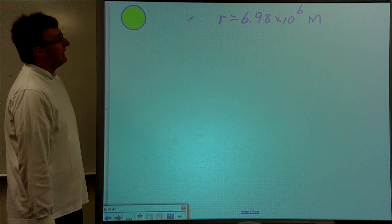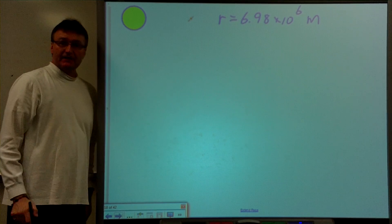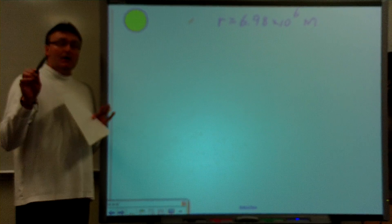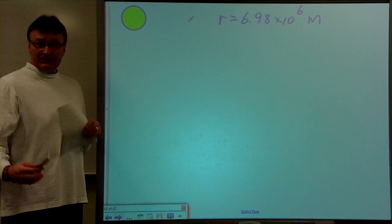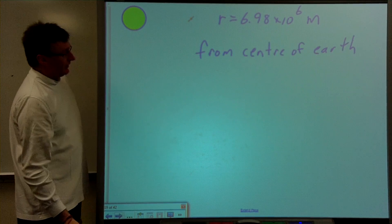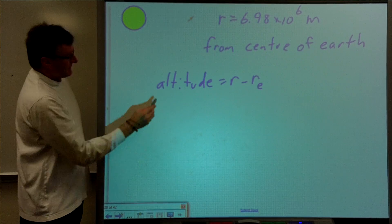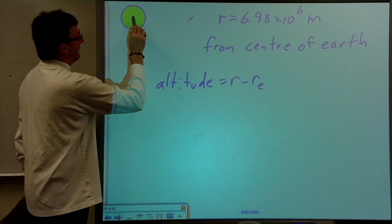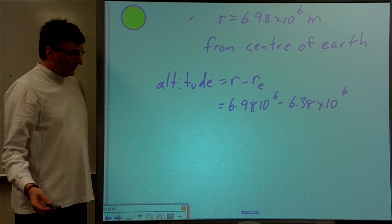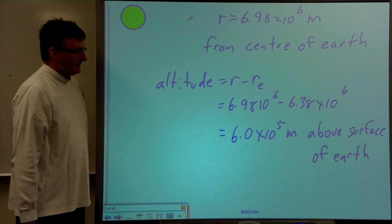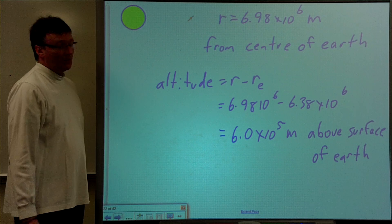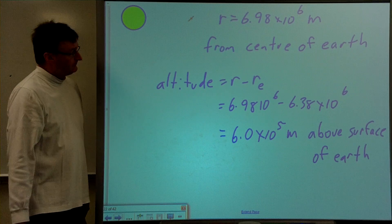We get the radius of the satellite's orbit is 6.98 times 10 to the 6 meters. But that doesn't answer the question because the question asked for the altitude of the satellite. You have to read the question carefully — it's asking for the altitude, the distance from the surface. So we subtract the radius of the Earth. The altitude equals the orbital radius minus the radius of the Earth, giving us 6.0 times 10 to the 5 meters, or 60 kilometers above the surface of the Earth. That's the answer to Part A.